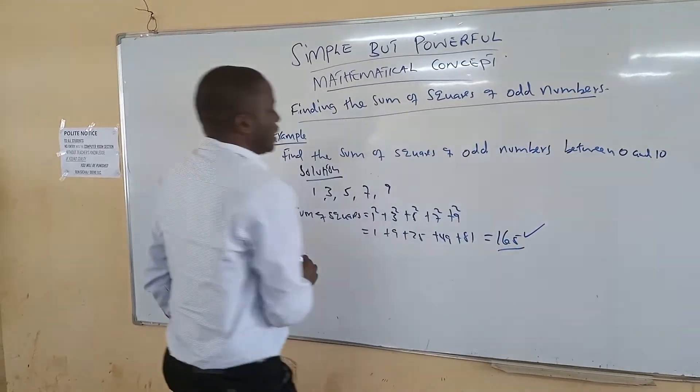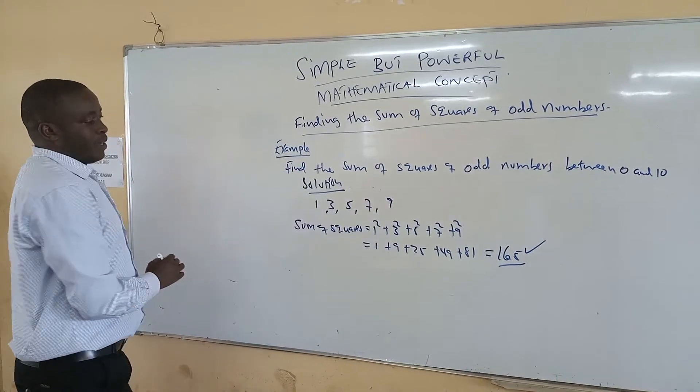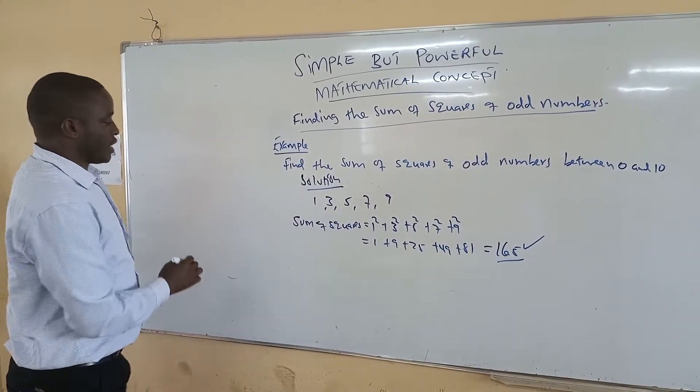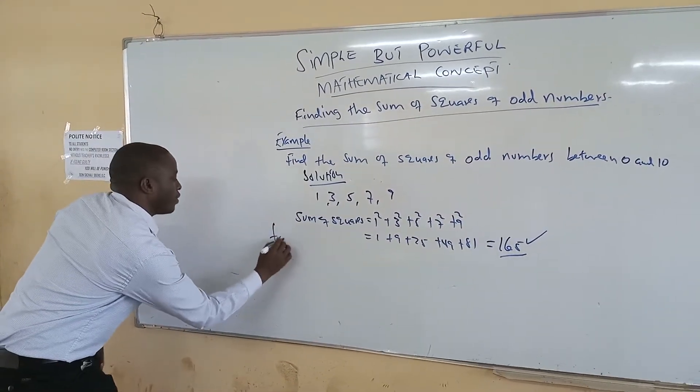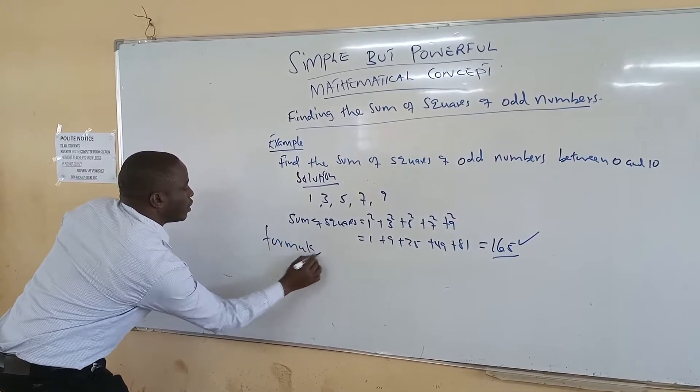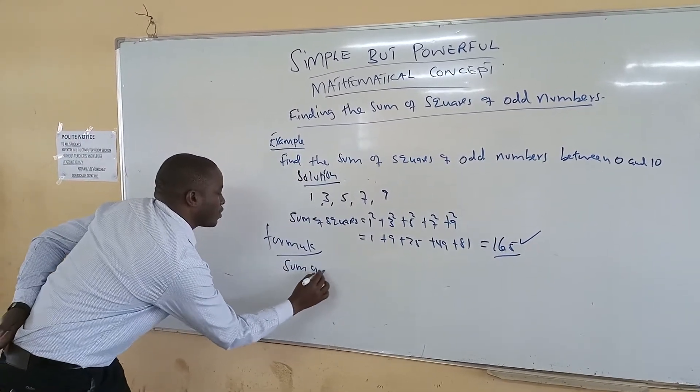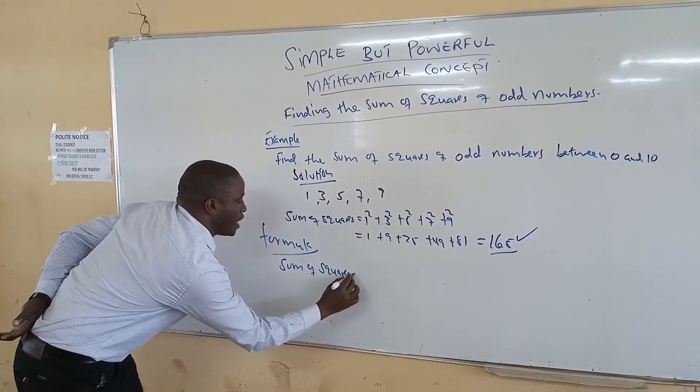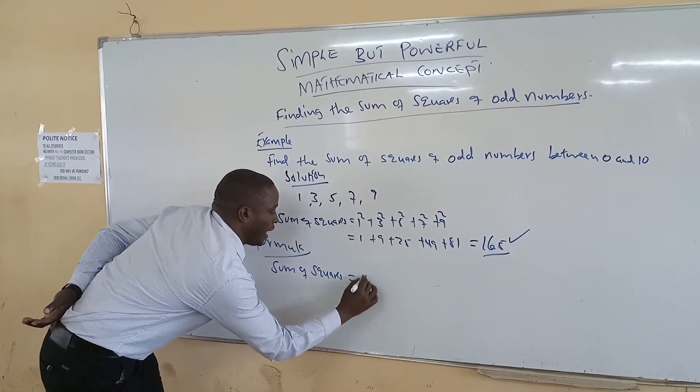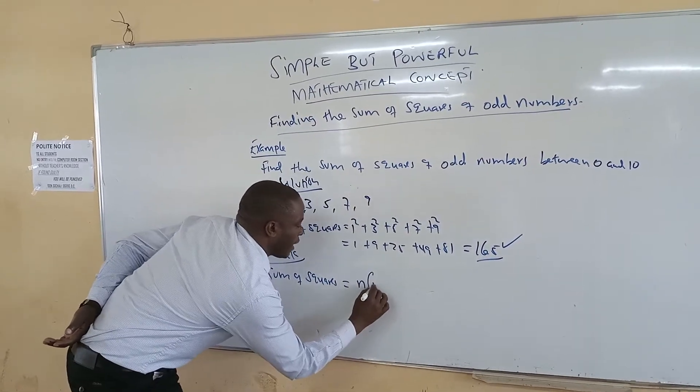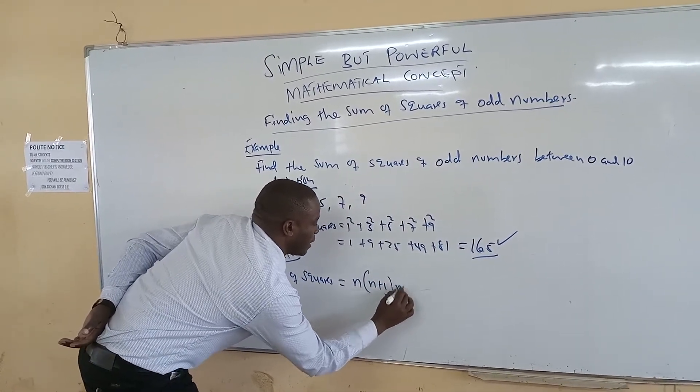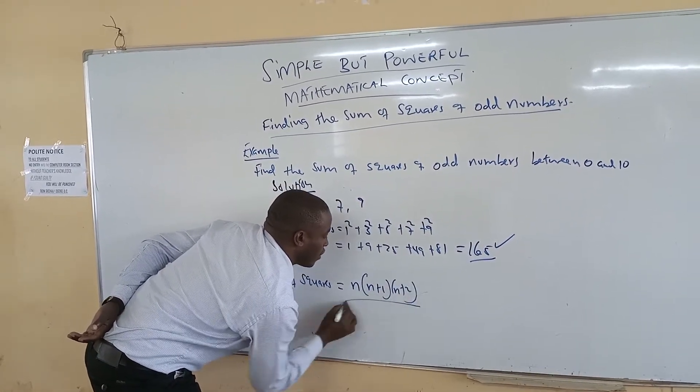There is a simple method of doing it. Instead of doing such, I can give you a formula you can use to find that. So we say sum of squares is equal to n into n plus 1, n plus 2, all over 6.